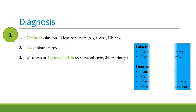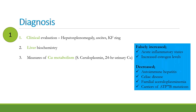Serum ceruloplasmin can be falsely elevated in acute inflammatory states and conditions with increased estrogen levels. It can normally be decreased in autoimmune hepatitis, celiac disease, familial aceruloplasminemia (i.e., congenital deficiency of ceruloplasmin), and some carriers of ATP7B mutations. One must be very careful when interpreting serum ceruloplasmin in these conditions.